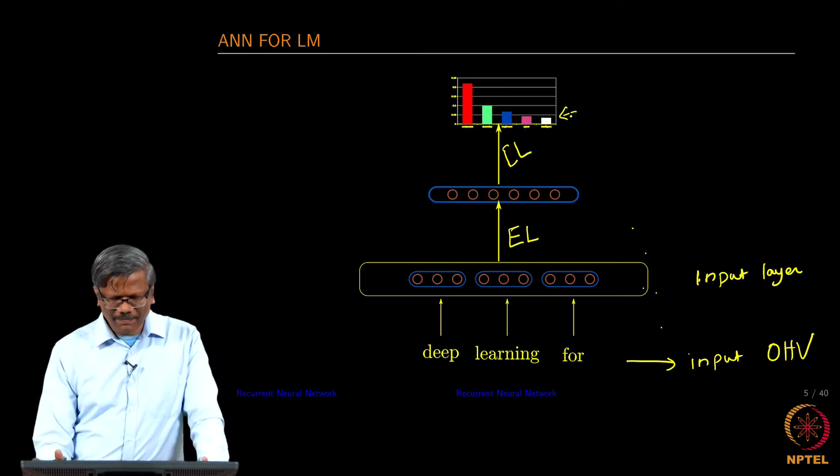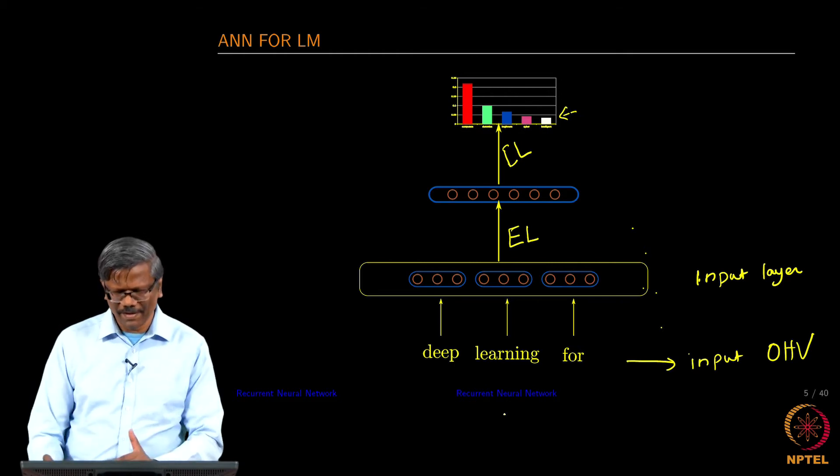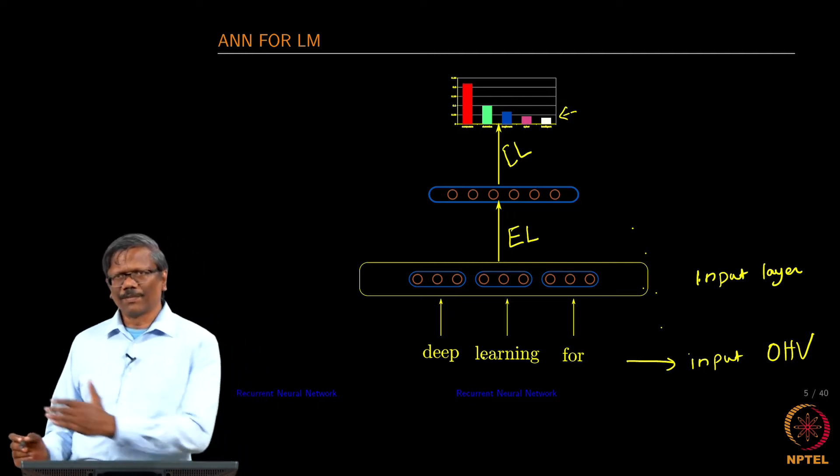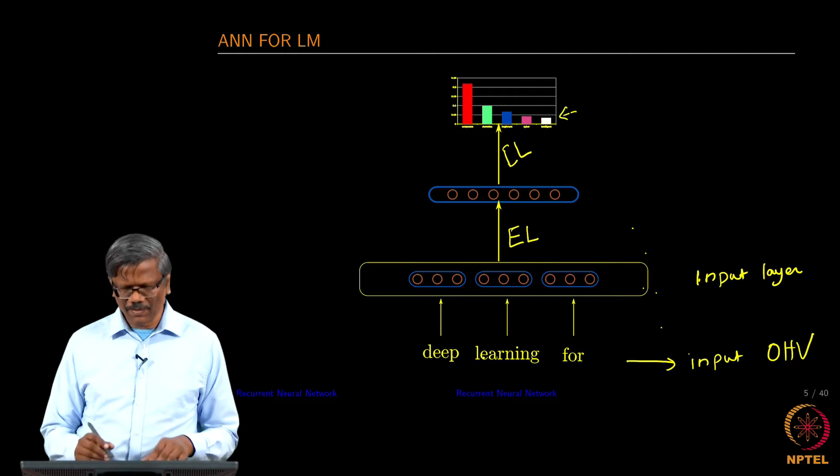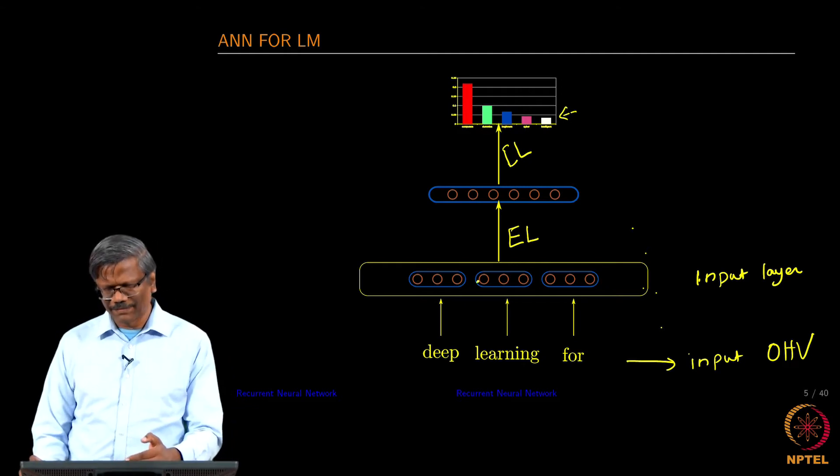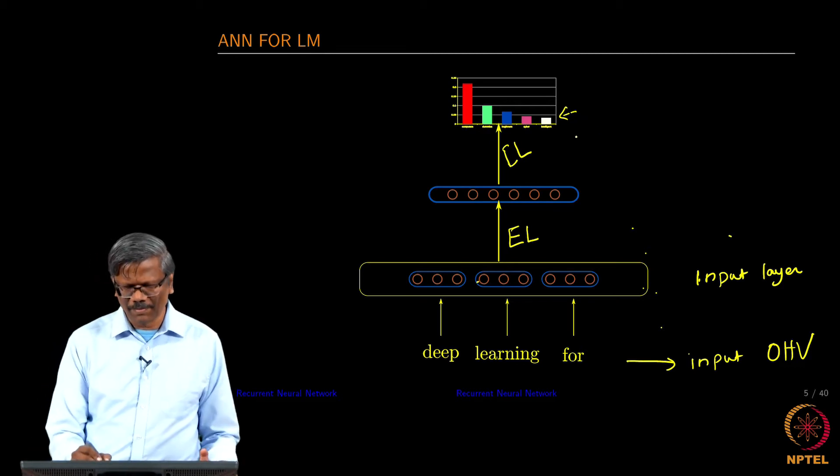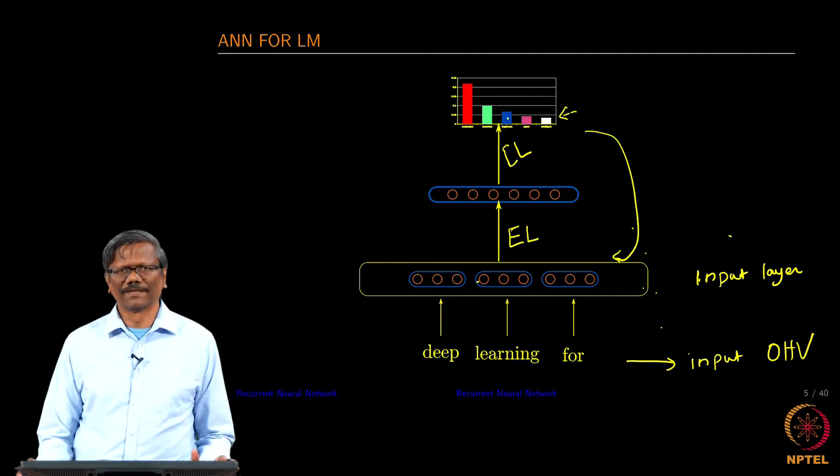What we do here is we have a fixed sized input window where we can input three words. Let's say that we have a corpus where we are going to be inputting all the words in this order. We're going to first start with three words and then say what should be the next word. We're going to train that. We do the back propagation training and then we continue to update this until the network stabilizes.